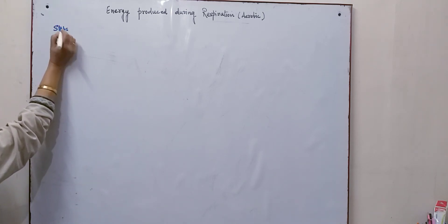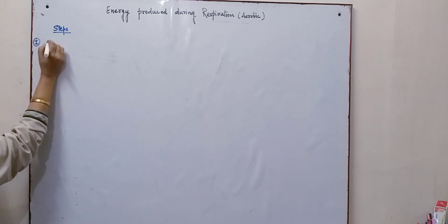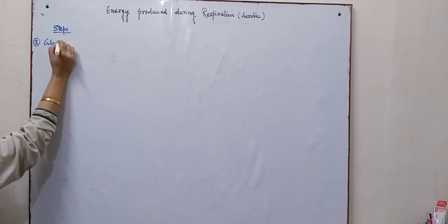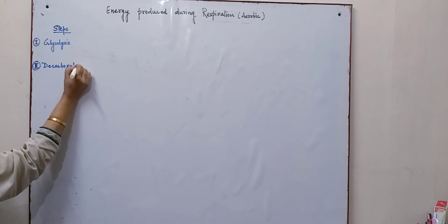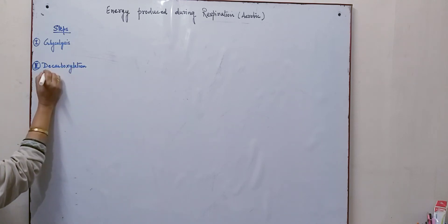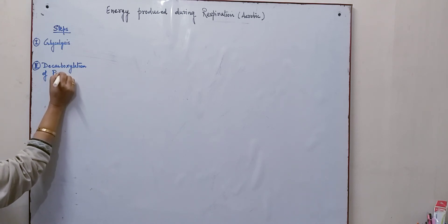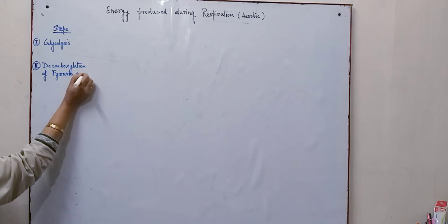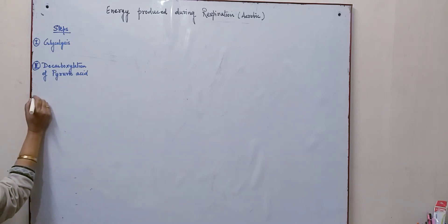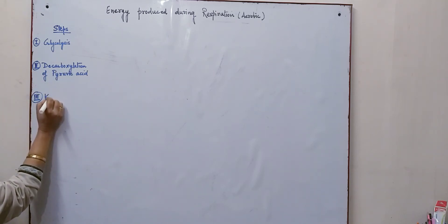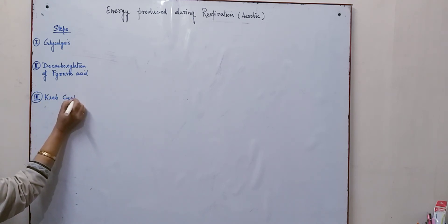Here I'm going to write the steps. The first step is the glycolysis. In glycolysis one molecule of glucose is converted into two pyruvic acid. Now this pyruvic acid then undergoes decarboxylation and forms acetyl coenzyme A. So here I'm writing decarboxylation of pyruvic acid or pyruvate. This acetyl coenzyme A formed as a result of decarboxylation will now enter into the Krebs cycle. So these are the major steps.